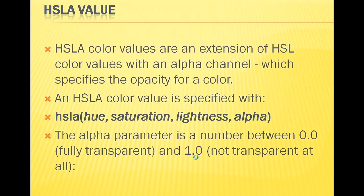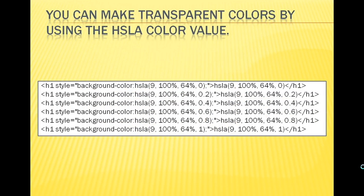HSLA value - HSLA stands for Hue, Saturation, Lightness, Alpha. It is an extension of the HSL value with an alpha channel, which specifies the opacity of a color. The alpha parameter is a number between 0.0 and 1.0 - 0.0 is fully transparent, 1.0 is not transparent at all. With transparent color, we can create HSLA color values.